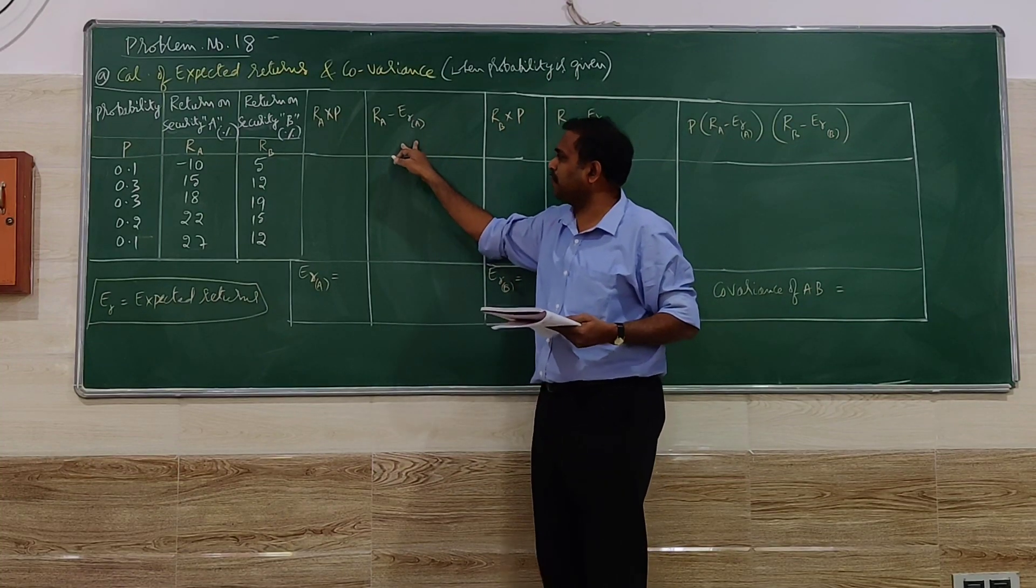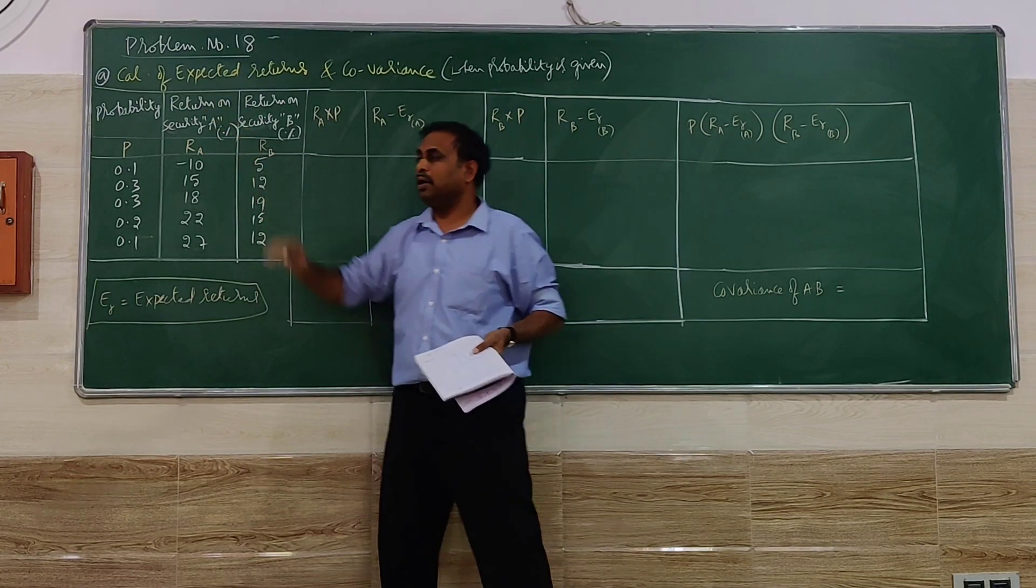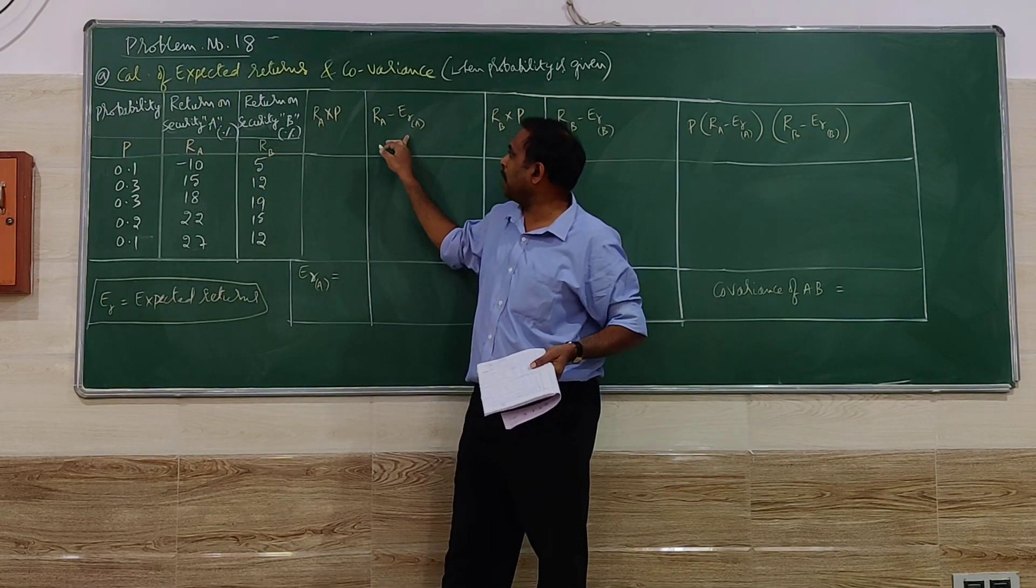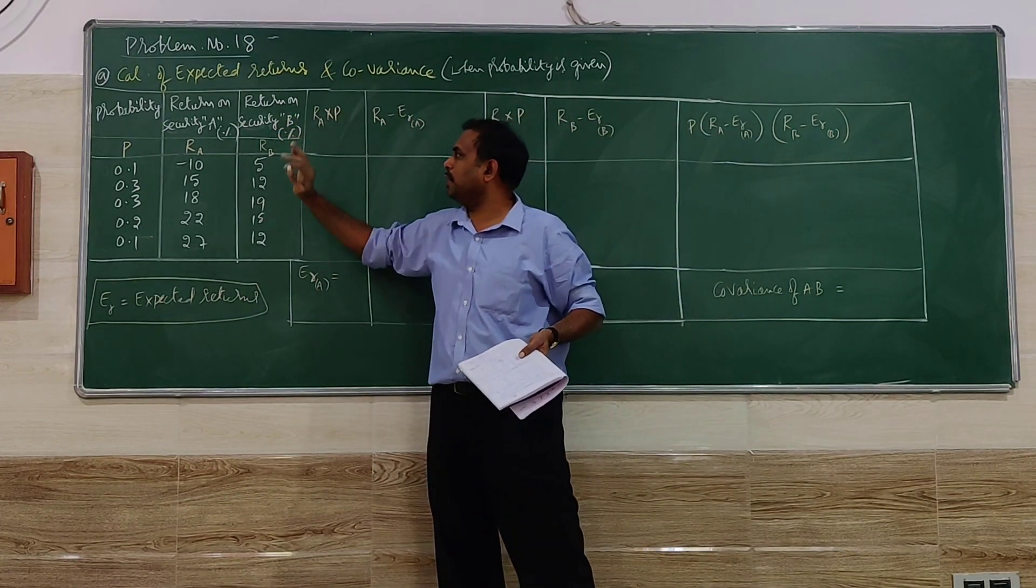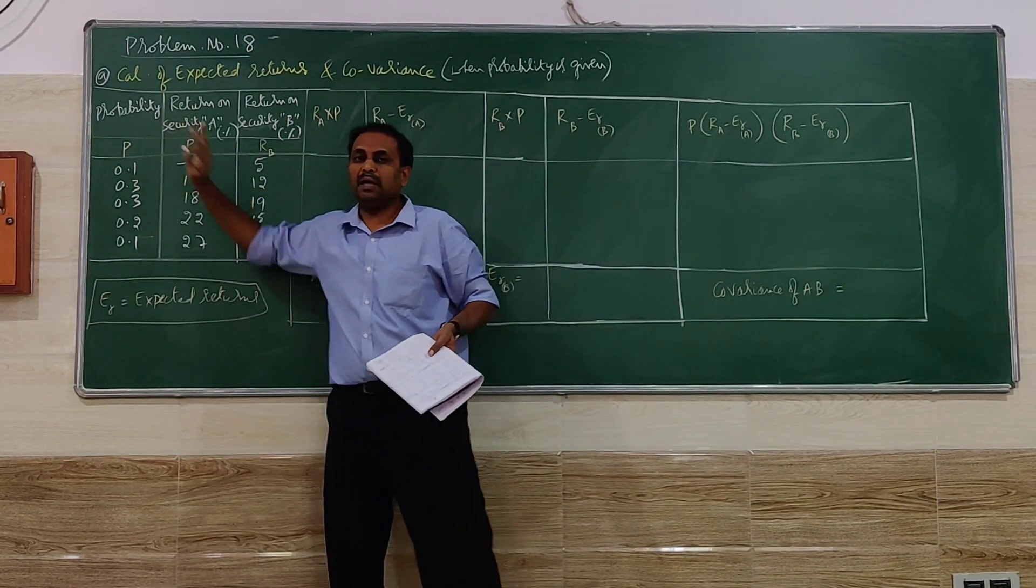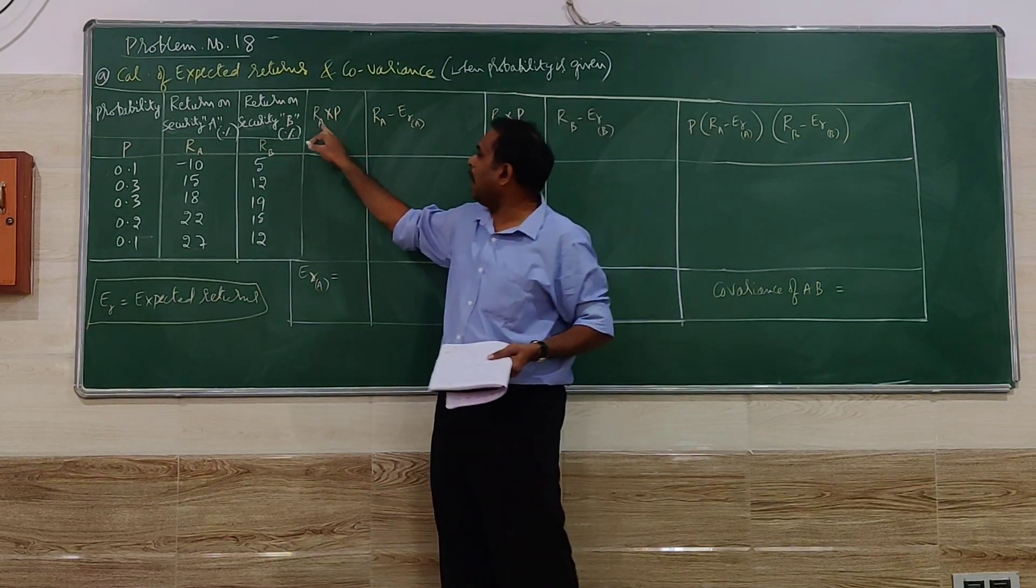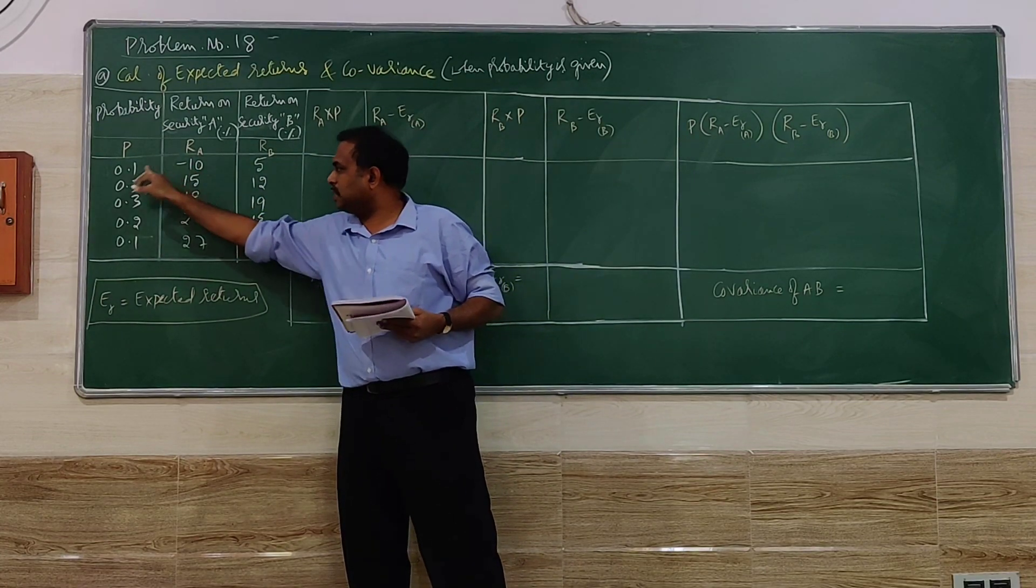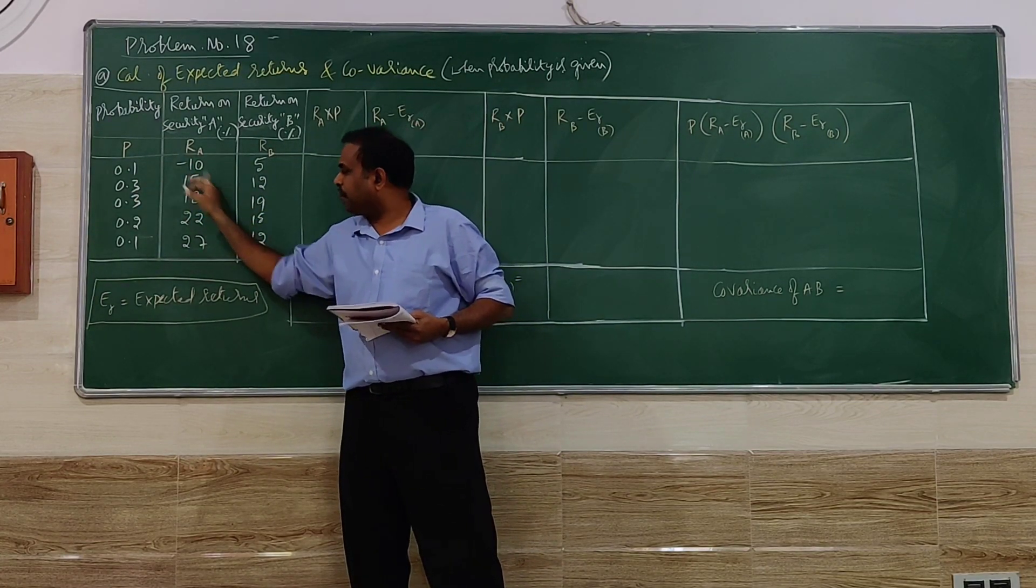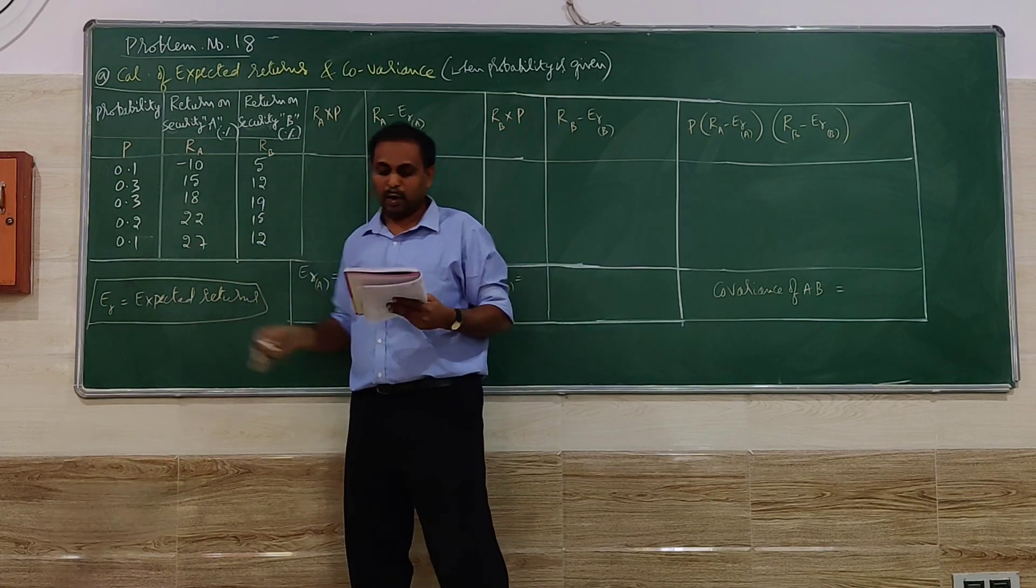Let me go further working now. RA into P, what is RA? Return on security A. What is RB? RB is nothing but return on security B and the probability. So steps are therein. Please carefully observe and work. RA into P, so minus 10 into 0.1, 15 into 0.3, 18 into 0.3, like that we have to work.